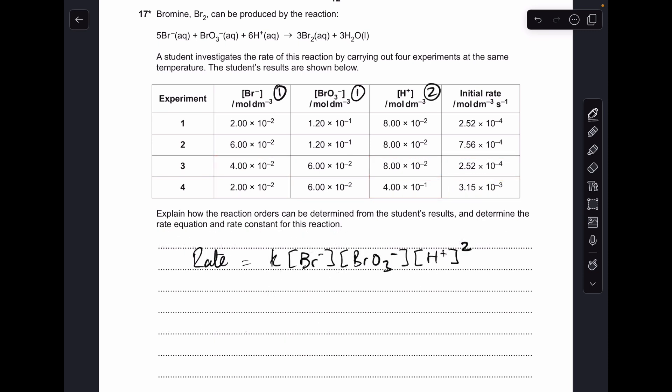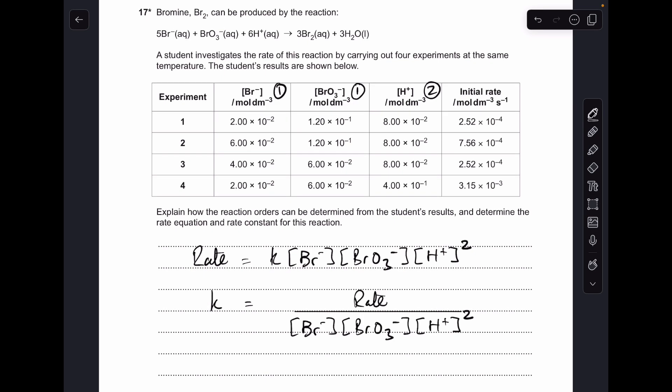So there's the rate equation, and we've been asked to calculate the rate constant. So we just need to make k the subject of that equation, so it rearranges to that. And now all we need to do is pick a row, an experiment—I always go for experiment one—put the numbers in, and we'll get our rate constant. So k is coming out with a numerical value of 16.4.